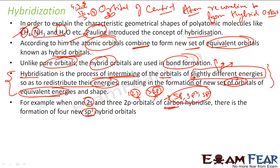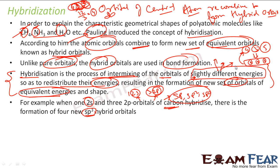For example, if I have three orbitals with energies 4, 3, and 5, they will combine to form again three orbitals, all with the same energy — 4, 4, 4. The same shape and same energy. This is called hybridization.